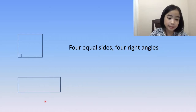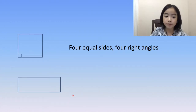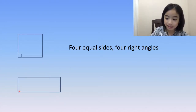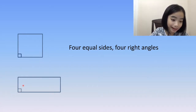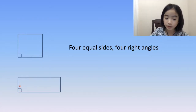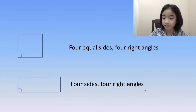Now, let's look at the rectangle. A rectangle is also a type of quadrilateral, and it also has four right angles. A rectangle has four sides and four right angles.